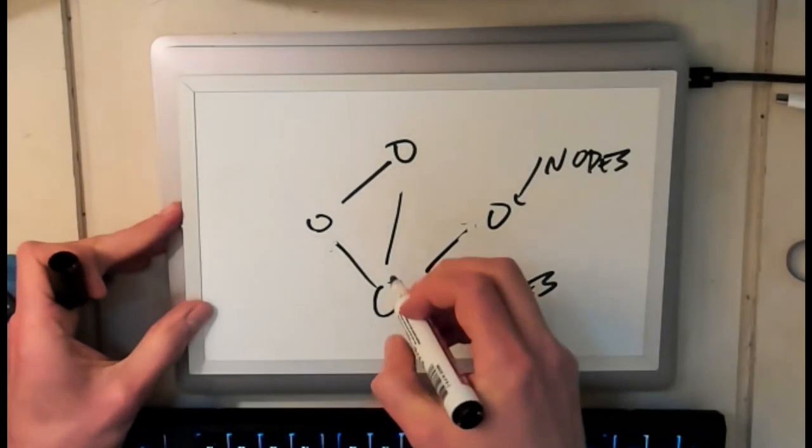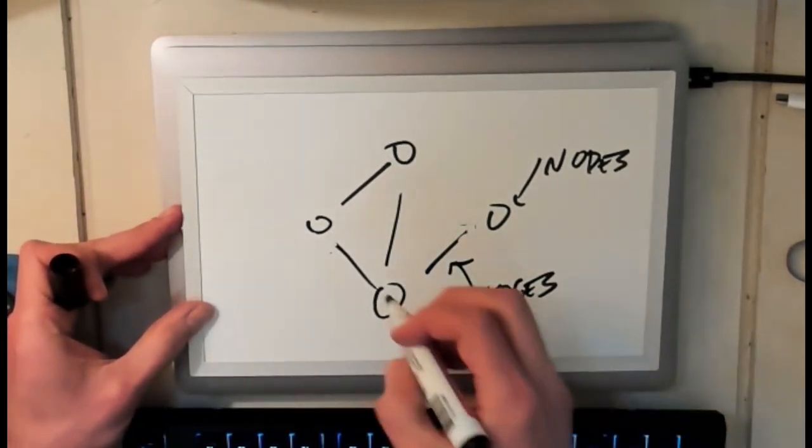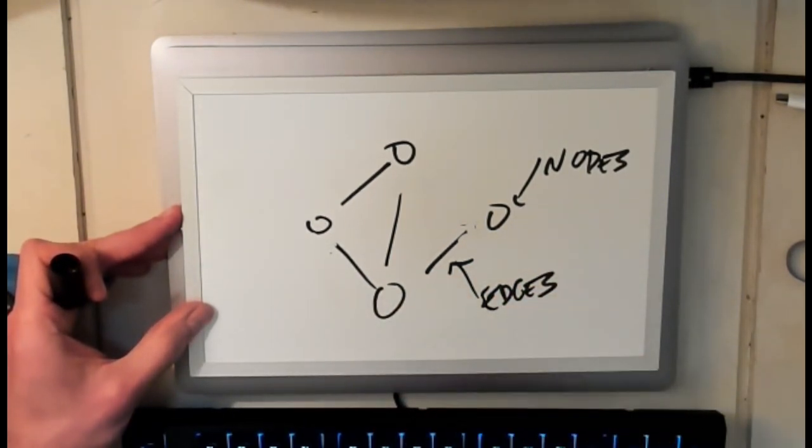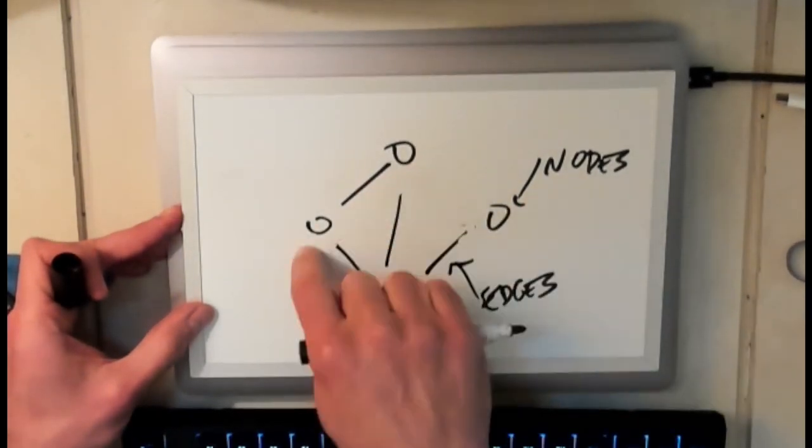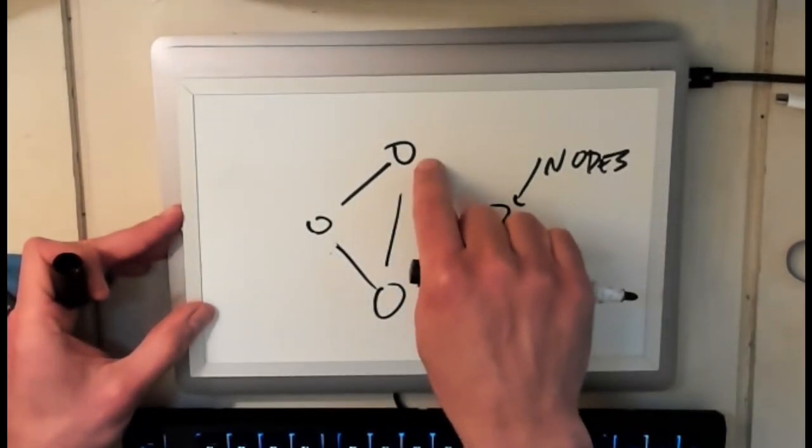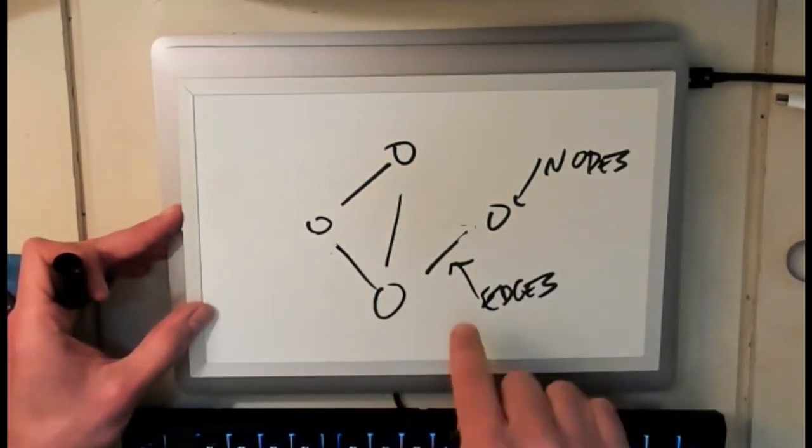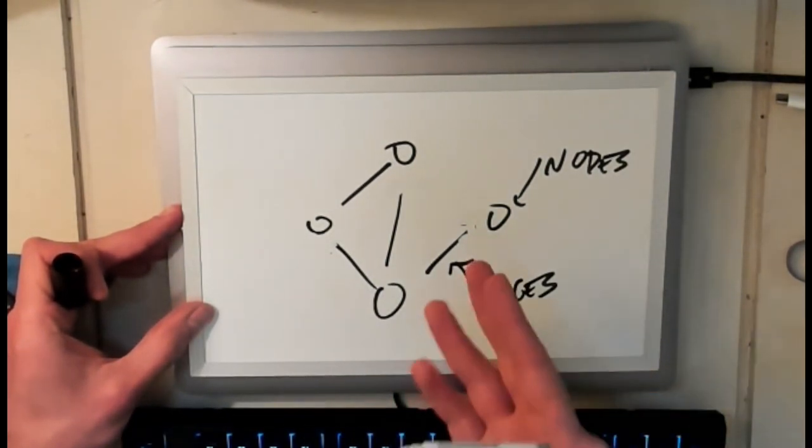The other thing too is frequently my nodes have some property, right, that I store them. So if you think about what we did with trees, this node might store a string or an int or it might represent a person or something like that. So I might actually store data at each node. Frequently I store data at each node in a graph that represents something about that node and helps me understand its relationship to the other nodes in the graph.